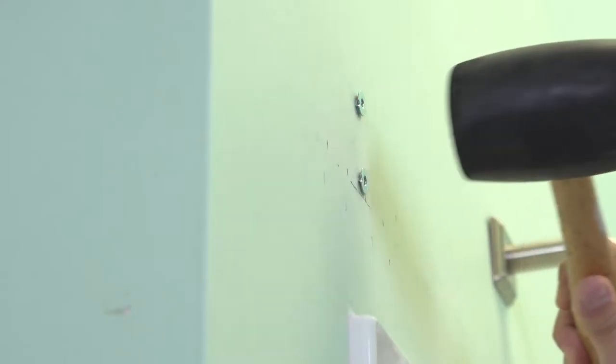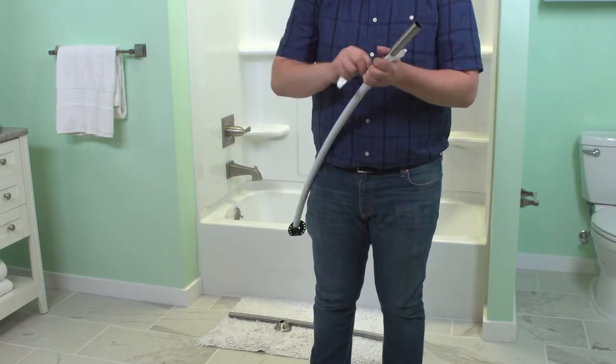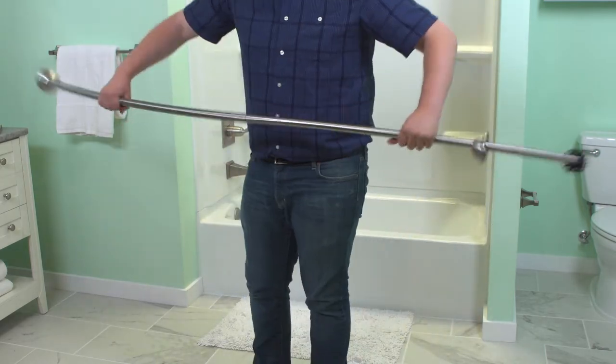Insert the drywall anchors and tap them into place. Disassemble the rod and remove the protective plastic cover. Slide the decorative covers into the middle of the rod, then reassemble.